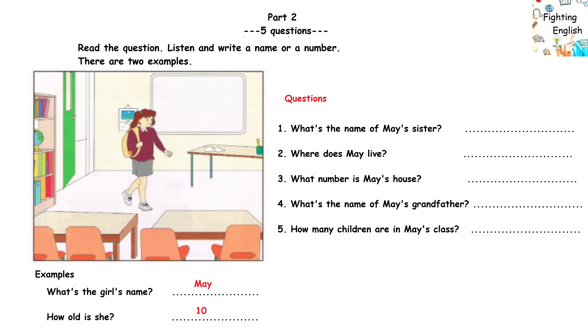3. And what number is your house, please? Our house is number five. Pardon? Number five.